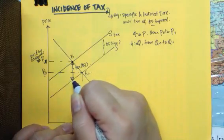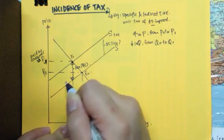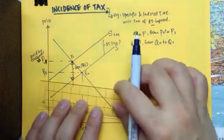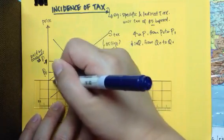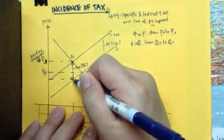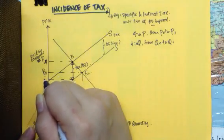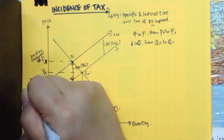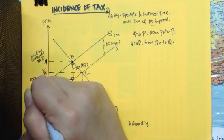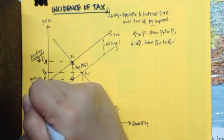Next, you realize that therefore, the producer themselves, they receive at a lower price, which is on a supply curve here, the original supply curve. So let me name this as P2. P2 will be the amount received by the producer.